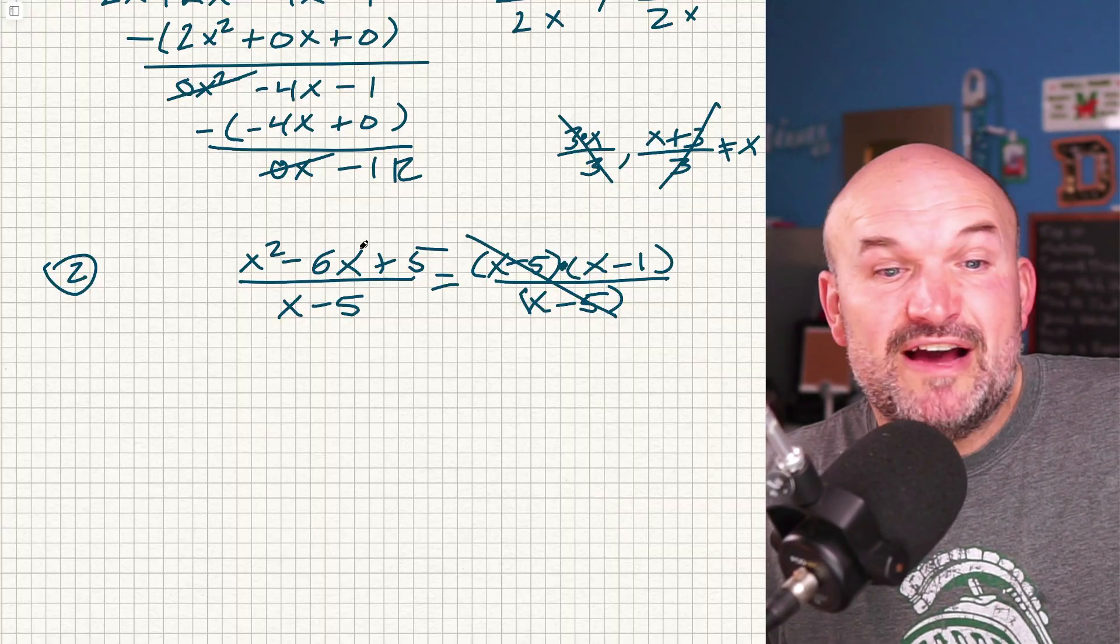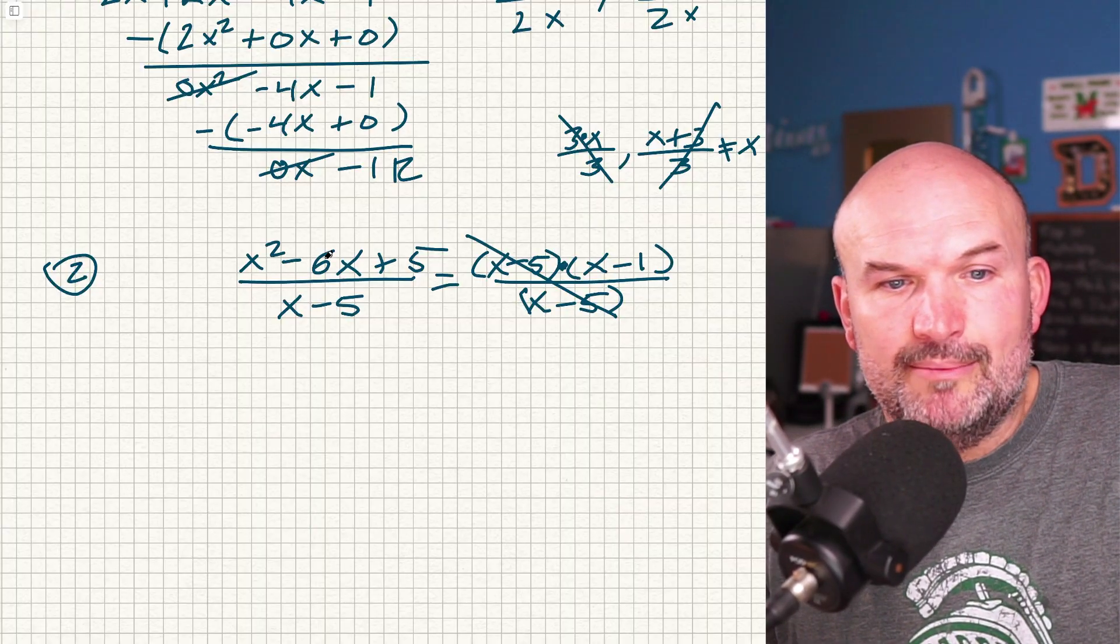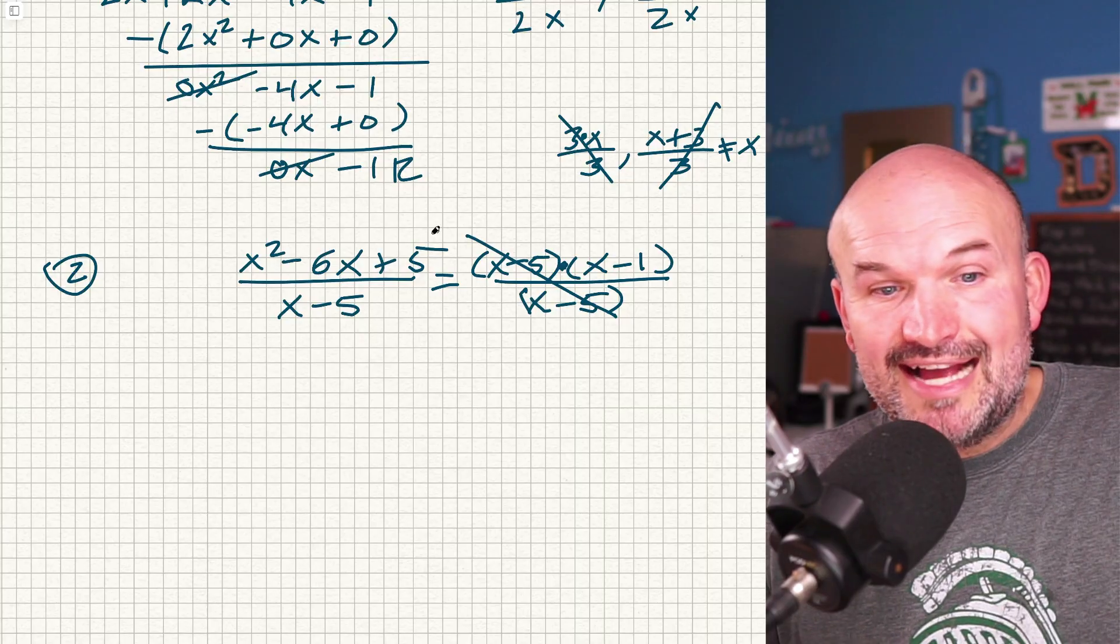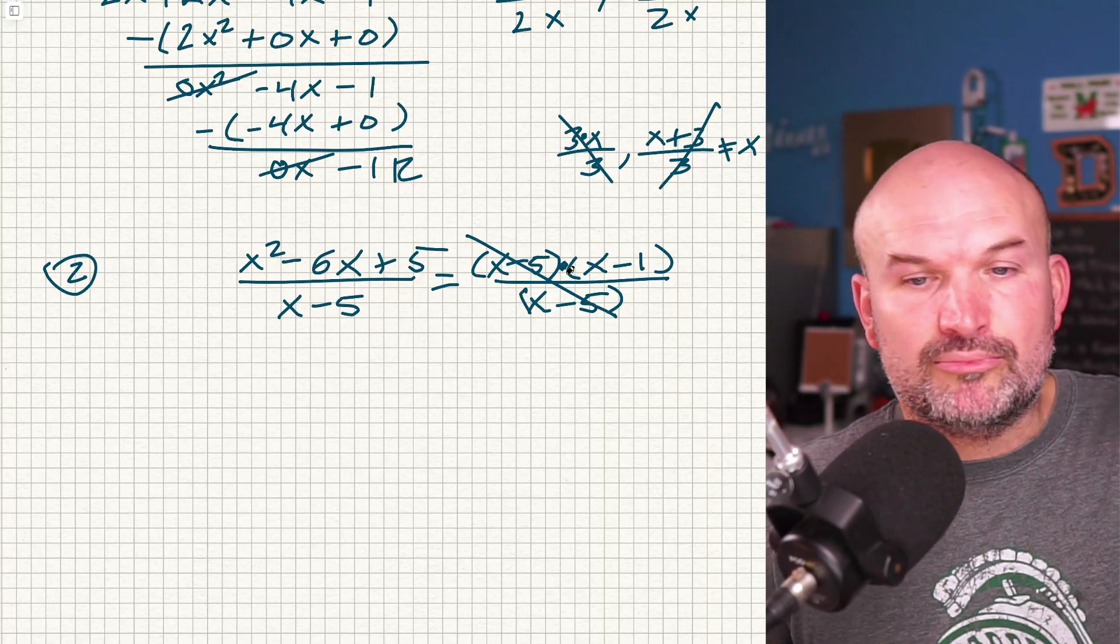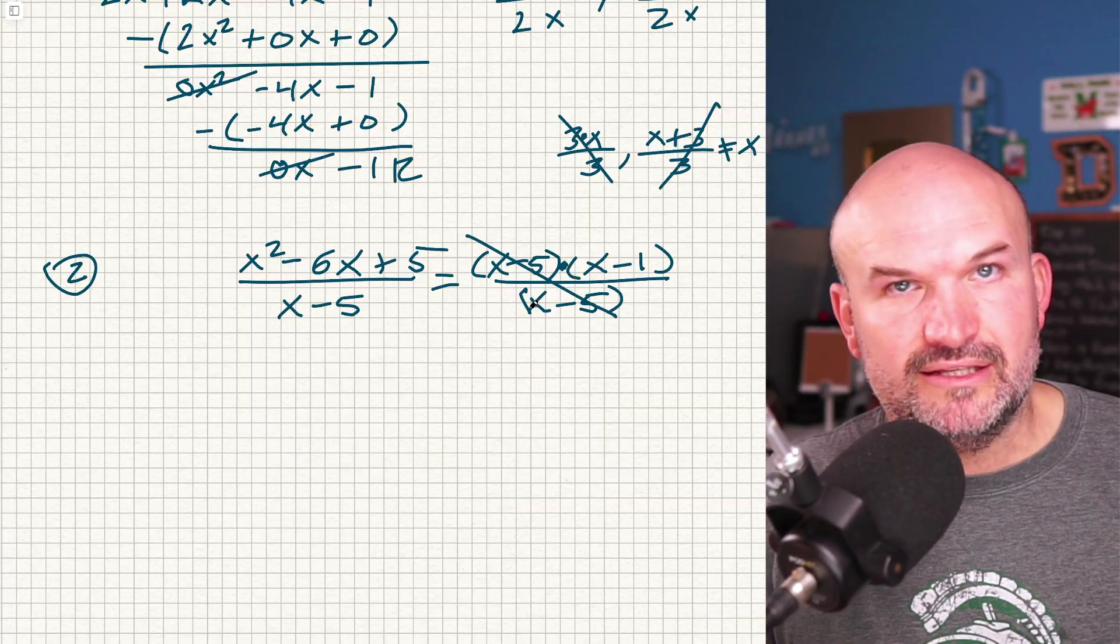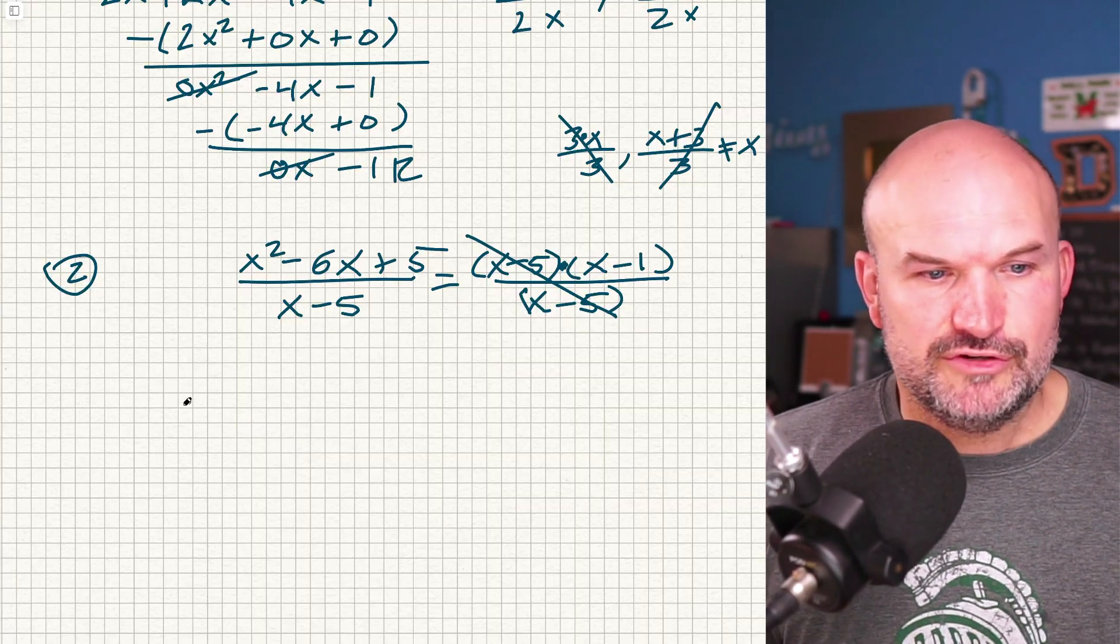But that's why factoring is important, right? You can see these are separated by subtraction and addition. I can't divide out my terms. I can't divide out the x's to divide out the fives. I have to factor it so it's a product. Now I can apply the division property. Little side point. Let's get into the long division.